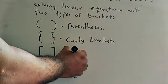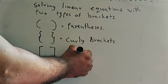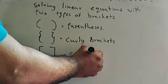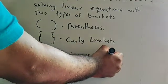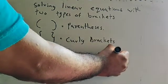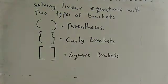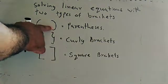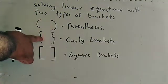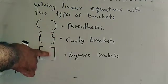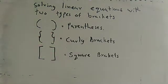These are square brackets. Using these brackets — parenthesis, curly brackets, and square brackets — we have to simplify. Look at this for example.